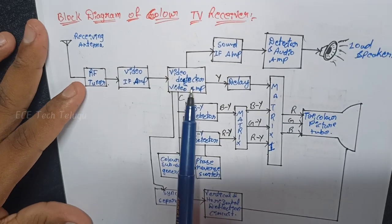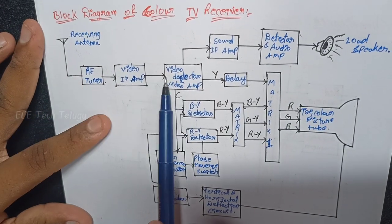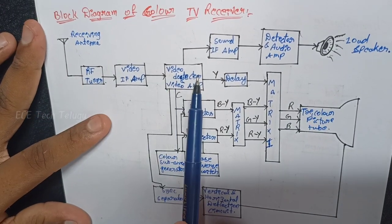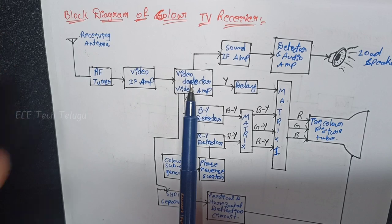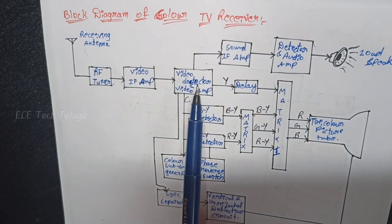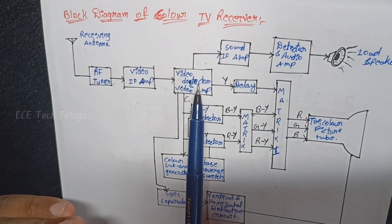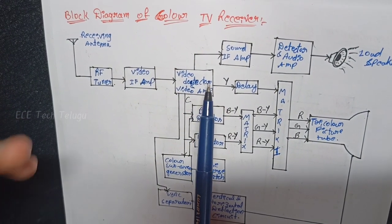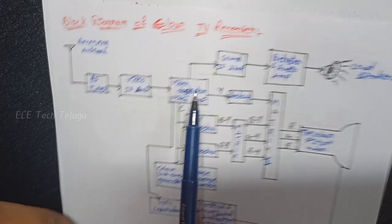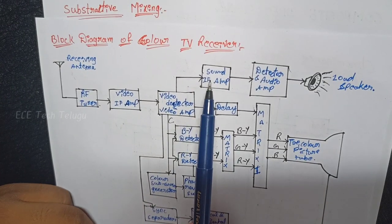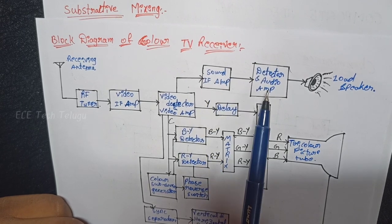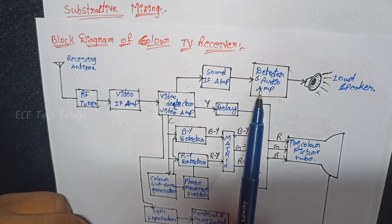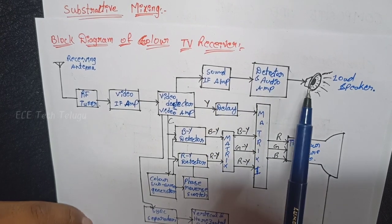So we have a weak signal at the RF tuner, and we need to amplify the video signal. We separate the signal into two parts: video and audio. The audio goes to the sound IF amplifier system, then the detector and audio amplifier.